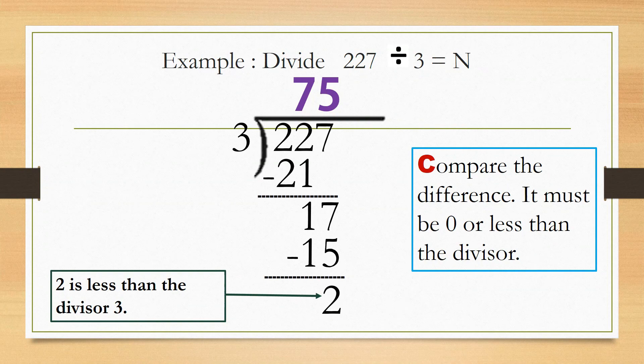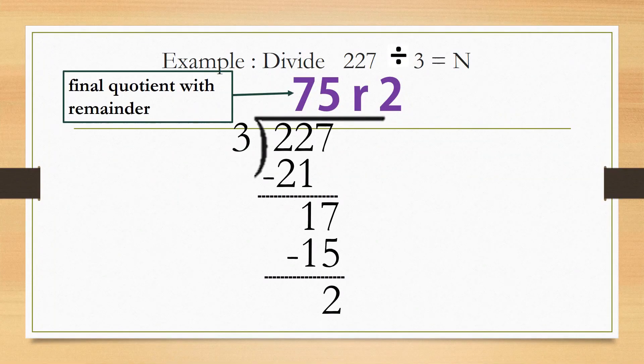And then compare the difference — it must be 0 or less than the divisor. Here, 2 is the difference and 2 is less than the divisor 3. So there are no more digits to divide, and our final quotient is 75 with a remainder of 2.